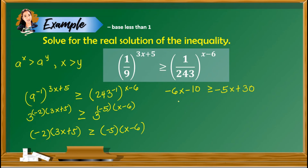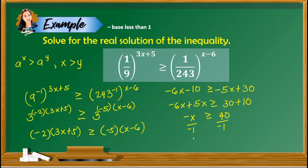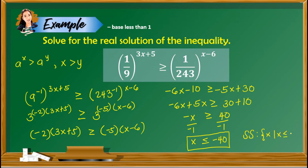Combining like terms: negative 6x plus 5x is greater than or equal to 30 plus 10, which gives negative x is greater than or equal to 40. Remember to make the variable positive — divide both sides by negative 1, and note that dividing by a negative number flips the inequality sign. Therefore, x is less than or equal to negative 40. The solution set is the set of x such that x is less than or equal to negative 40.